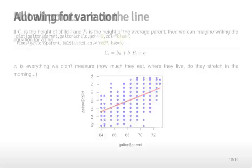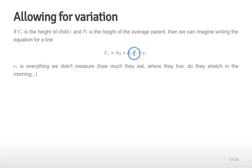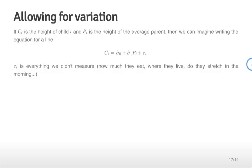We can make the equation slightly more complicated by adding an error term: child's height equals the intercept plus slope times parent's height plus EI, where EI represents everything we didn't measure. This could be measurement error, or unmeasured factors like how much a child was eating, where they lived, whether they stretch in the morning, or whether they're healthy or sick — all of which might contribute to the child's height above and beyond what we know about the parent's height.